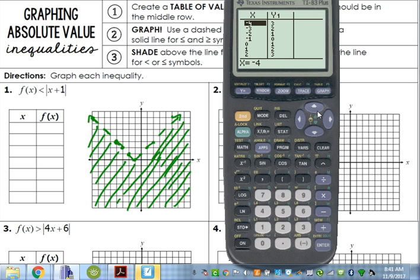Now don't spend a whole lot of time coloring in your graph. That's sufficient right there. I know it's not very pretty, but it is sufficient. So accurately graph the absolute value function like we've been doing. If it's not equal to, then your line should be dashed. Then you shade above if it's greater than, you shade below if it's less than.